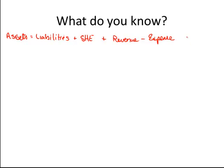We know that this accounting equation always stays in balance, and also leads us to our financial statements at the end. But before we get to the financial statements, you'll remember that there are four kinds of assets: current assets and the non-current assets, which include property, plant and equipment, long-term investments, and intangibles.